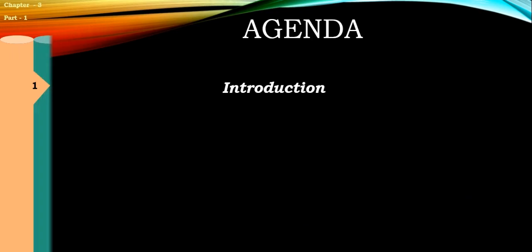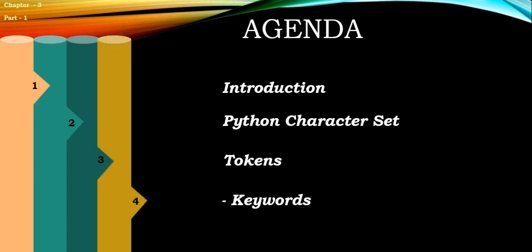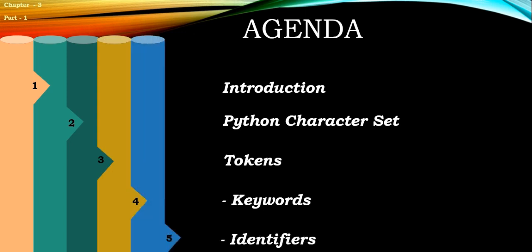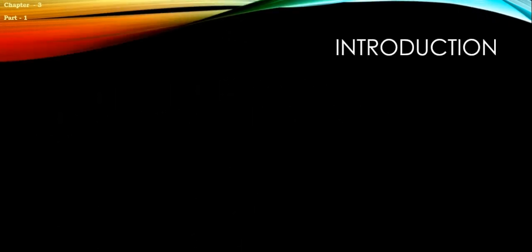Then we'll see Python character set. After that we'll see tokens. Number four, we'll see keywords. Number five, identifiers, and at the last we'll see the introduction of literals. Let's begin with introduction. We all have heard about the term IPO.